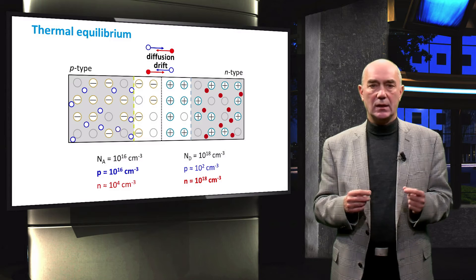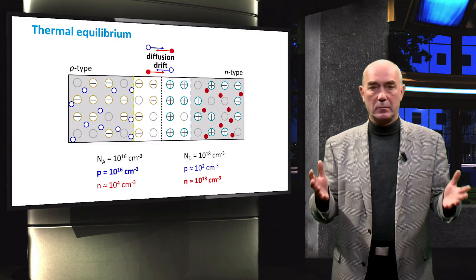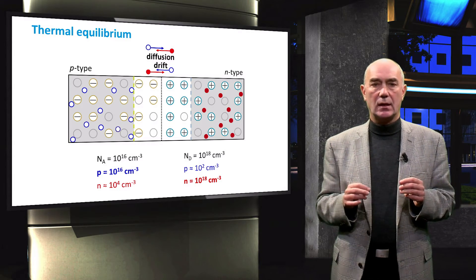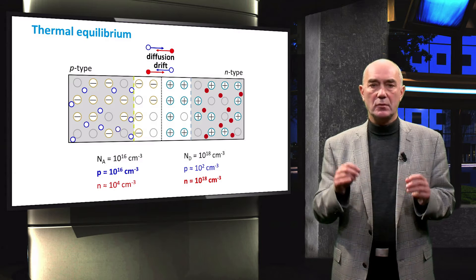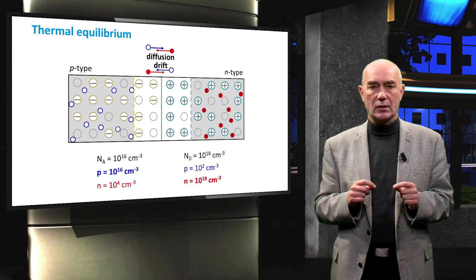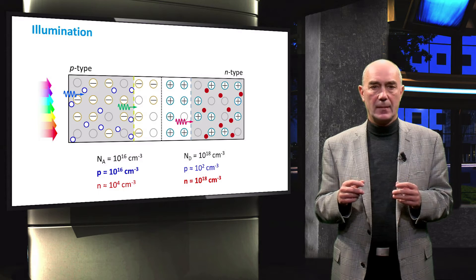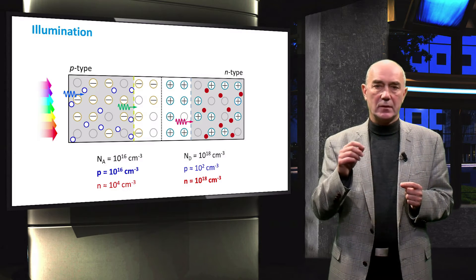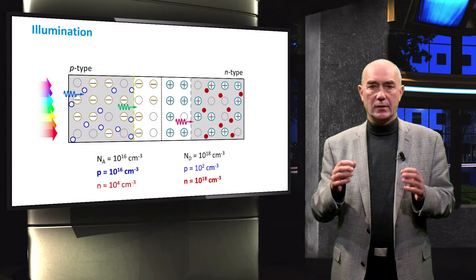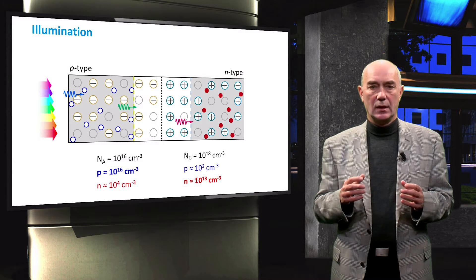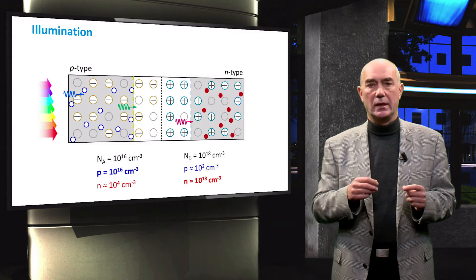To understand how many extra carriers are created under sunlight illumination, we use the same carrier concentration numbers from previous videos. The PN junction is illuminated with photons of different energies. The absorption coefficient of semiconductor materials depends on photon energy — it is high for high-energy photons and low for low-energy photons.